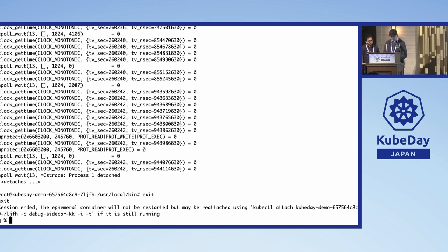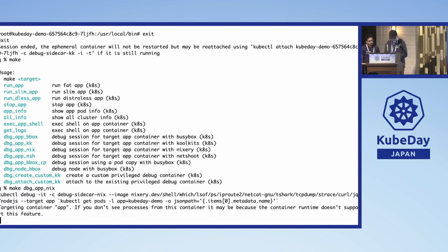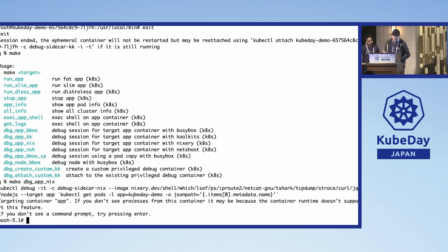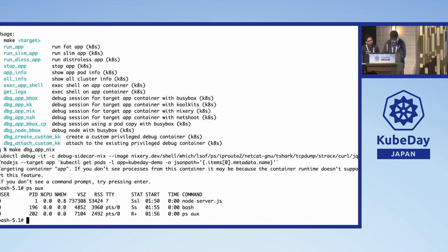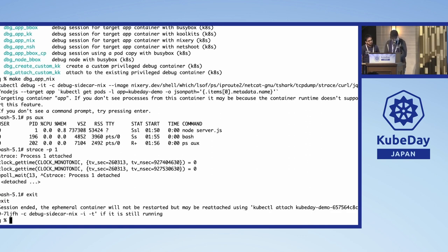Now I'll try the same thing with Nixery. If you look at this funny-looking image name, you'll see it has a lot of different package names in it — for example, lsof, netcat, tcpdump, and strace. It takes a little bit to pull because it gets created on the fly. The Node application is running and we get the same debugging result.